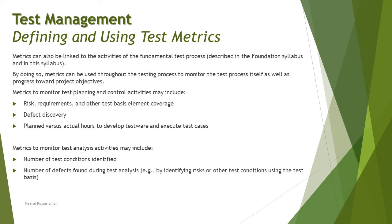Let's start with the very first phase: test planning. Metrics to monitor test planning and control activities may include risk, requirements, and other test basis element coverage — meaning you need to see what coverage you have achieved from the point of risk, requirements, and any other test basis you are targeting. Also included is defect discovery — what is your approach in the plan to identify as many defects as possible.